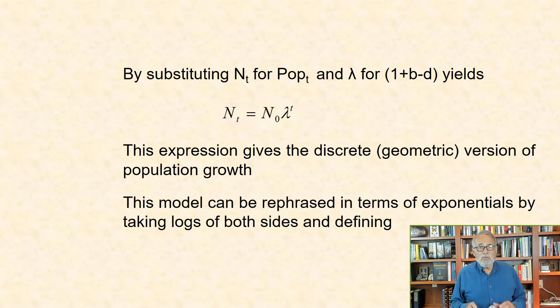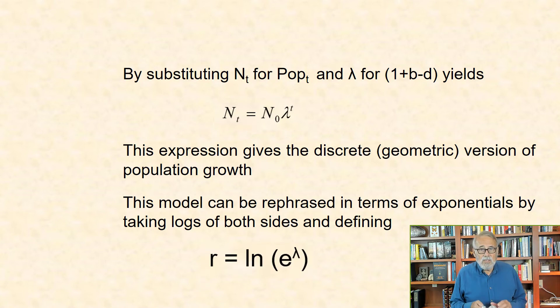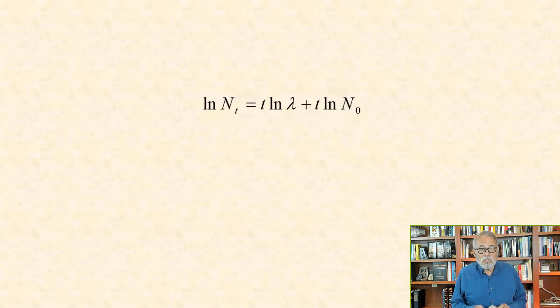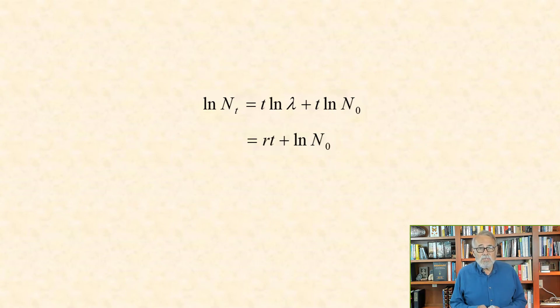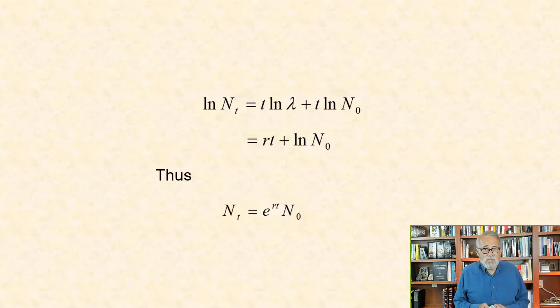This model can be rephrased in terms of exponentials by taking logs of both sides and defining r equal ln of lambda. Therefore, ln n(t) equal t ln lambda plus ln of number at time 0, which equals rt plus ln n(0). Thus nt equal e raised to the rt times number at time 0.